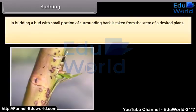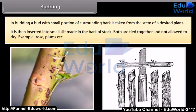In budding, a bud with a small portion of surrounding bark is taken from the stem of a desired plant. It is then inserted into a small slit made in the bark of the stock. Both are tied together and not allowed to dry. Examples include rose and plums.